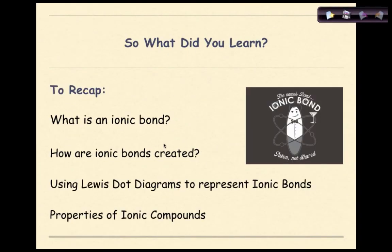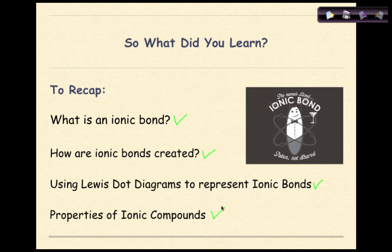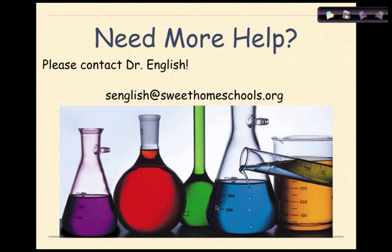So what did we learn in this review? We went over what is an ionic bond, how ionic bonds are created, and looked at examples of how Lewis dot diagrams can be used to represent ionic bonds. Finally, we talked about some general properties of ionic compounds. If you need more help, contact me at the email address shown. Hope this was helpful — have a great day!